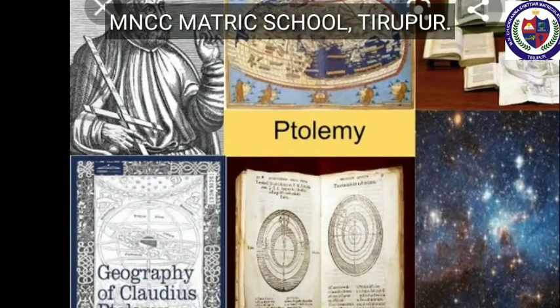Ptolemy's Geography is a gazetteer and atlas of Roman times providing geographical details of the Roman Empire in the 2nd century AD. Kaveripoompuharr, Korkai, Kanyakumari, and Musiri are some of the places mentioned in his geography.